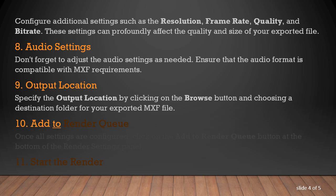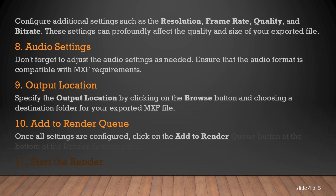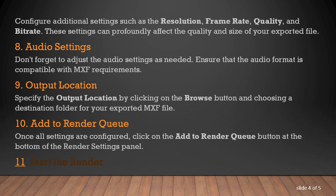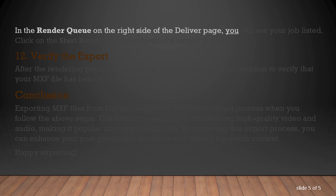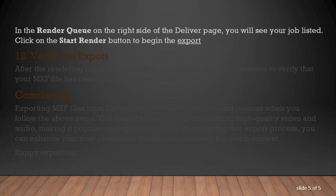Step 10: Add to Render Queue. Once all settings are configured, click on the Add to Render Queue button at the bottom of the Render Settings panel. Step 11: Start the Render. In the Render Queue on the right side of the Deliver page, you will see your job listed. Click on the Start Render button to begin the export process.